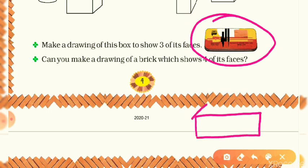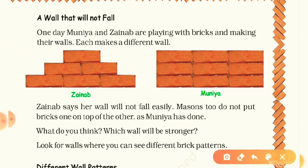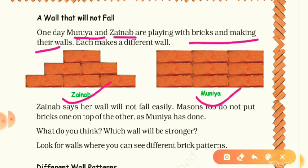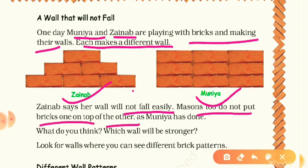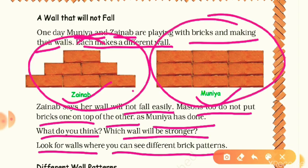Now, the last topic of today's class: 'A Strong Wall Pattern.' We will find out which wall pattern is the strongest. One day, Muniya and Zainab are playing with bricks and making walls. You can see Zainab's wall pattern and Muniya's wall pattern on screen — each made a different wall. Zainab says her wall will not fall easily, and that masons do not put bricks one on top of the other the same way Muniya has done. What do you think — which wall will be stronger?